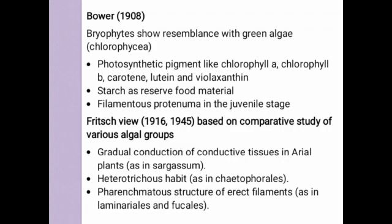On earth, pteridophytes are the first terrestrial plants to possess conducting tissues. Next is their heterotrichous habit. Heterotrichous habit is present in green algae and it means producing two types of branches: the first is the prostrate branch, while the second is the erect branch. The third feature is the parenchymatous structure of erect filaments.